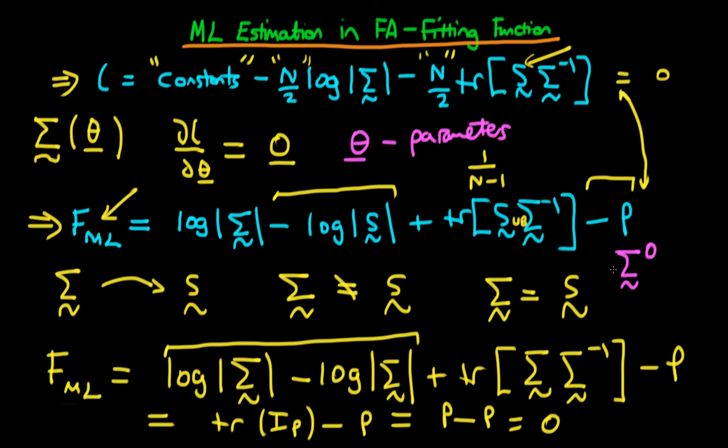On that basis, they change θ slightly in order to decrease F_ML slightly. They continue with this process of changing θ, which changes our estimate of Σ. They stop when between iterations Σ isn't getting any closer to S—they look for convergence of the predicted matrix Σ to the sample variance-covariance matrix S.